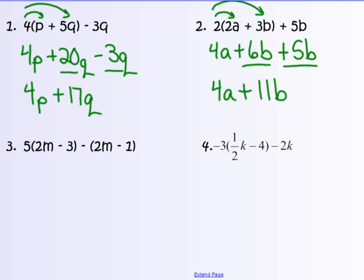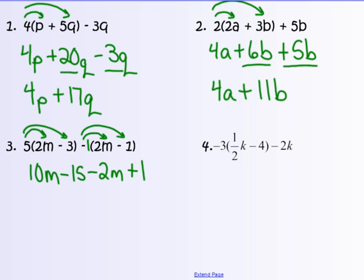Number 3 has a double distribute problem — two distributive properties. 5 times 2m is 10m, and 5 times negative 3 is negative 15. Then negative 1 times 2m is negative 2m, and negative 1 times negative 1 is positive 1. Now combine like terms: 10m minus 2m is 8m, and negative 15 plus 1 — different signs, subtract — gives negative 14. Final answer: 8m minus 14.